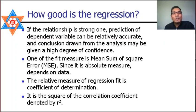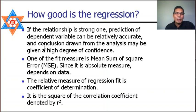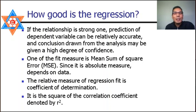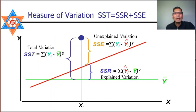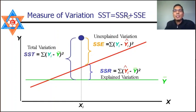Finding the regression coefficients and fitting the regression line is not sufficient; we must test whether the regression equation is good for prediction. If the relationship is strong, prediction of the dependent variable can be relatively accurate and conclusions drawn can be given a high degree of confidence. One fit measure is the mean sum of squares error (MSE), which is an absolute measure depending on the data units.